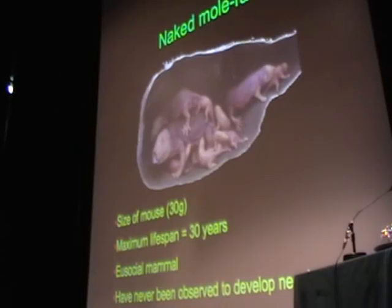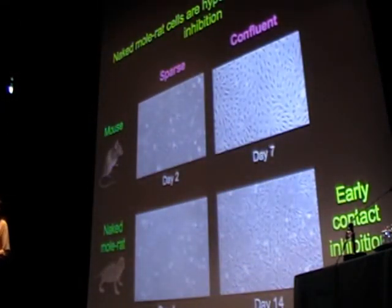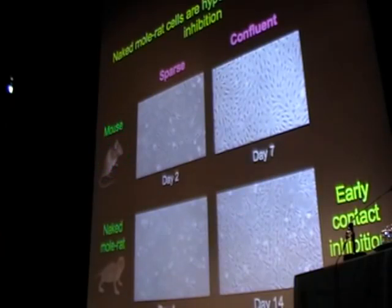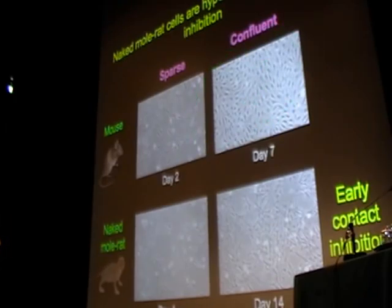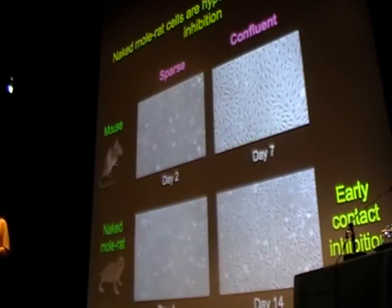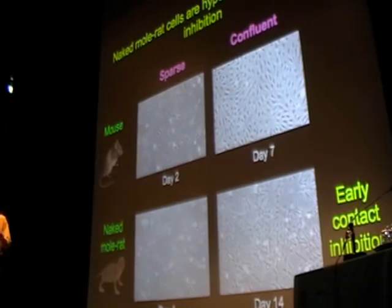We are going after that anti-cancer mechanism in naked mole-rats. We started by isolating primary fibroblasts from naked mole-rats, and of course we have mouse primary fibroblasts as controls. When you grow them in culture, you start with sparse culture; in seven days they are rapidly growing and fill the plate — a monolayer stage called confluence, triggered by early contact inhibition. This is a really powerful anti-cancer mechanism that prevents uncontrolled cell proliferation, meaning cells cannot grow on top of each other.